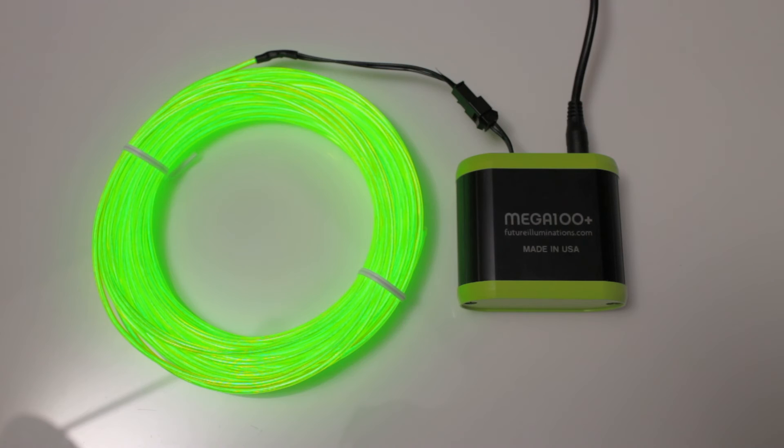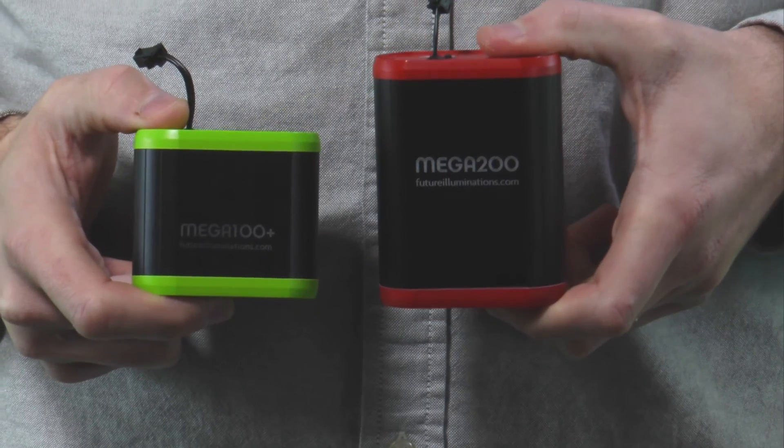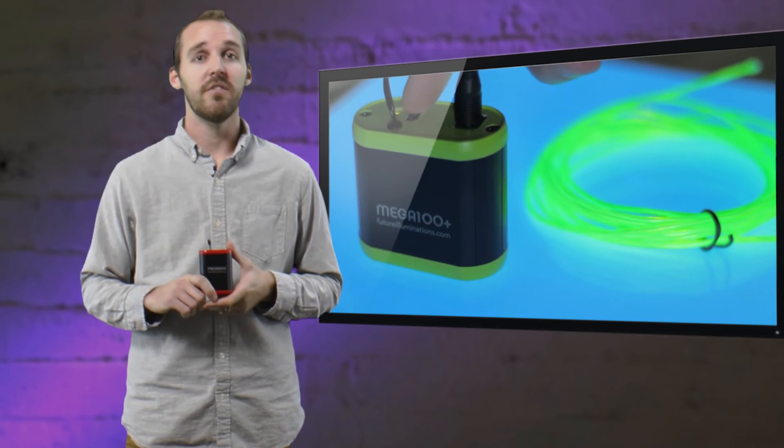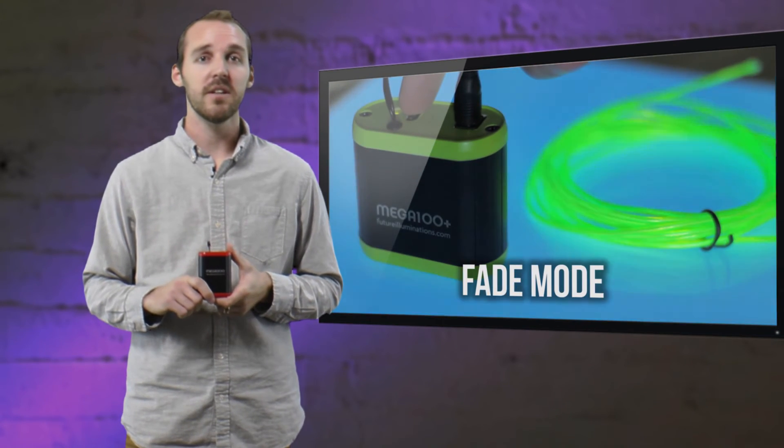Our Mega 100 Plus is the most compact, powerful inverter on the market today. It powers up to 100 feet of EL wire or up to 350 square inches of EL panels. The Mega 100 Plus and 200 have three different modes: a variable fade, a variable blink, and constant on.